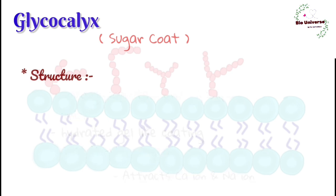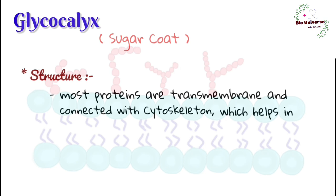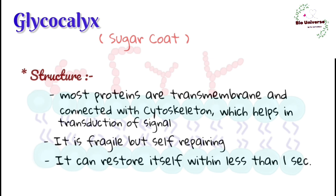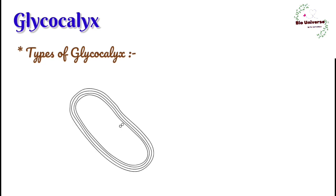Most of the associated proteins of glycocalyx are transmembrane and can be connected to the cytoskeleton. This connection helps in the transduction of signals from the external to the internal parts of the cell. The cell coat is fragile but self-repairing — it can restore itself within less than one second by absorbing plasma constituents.